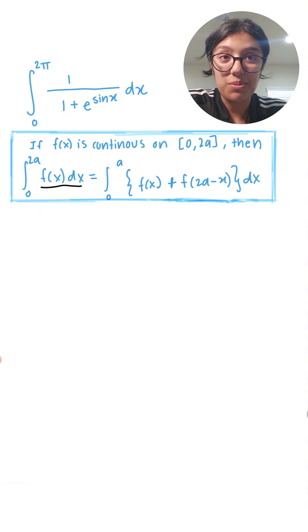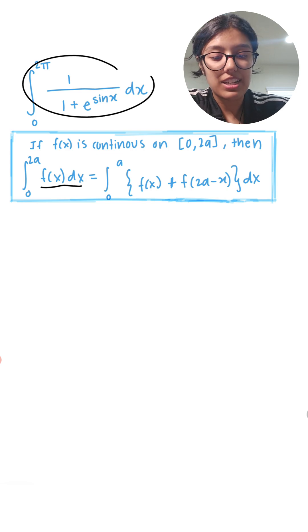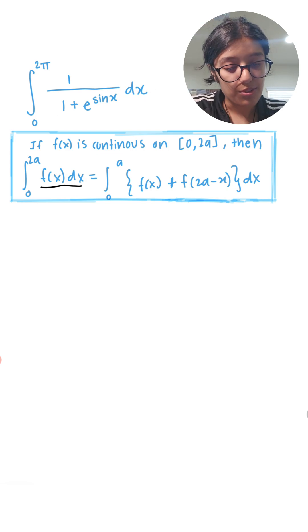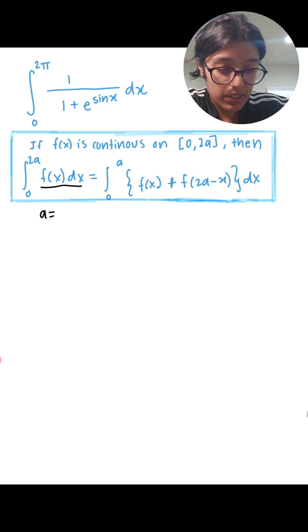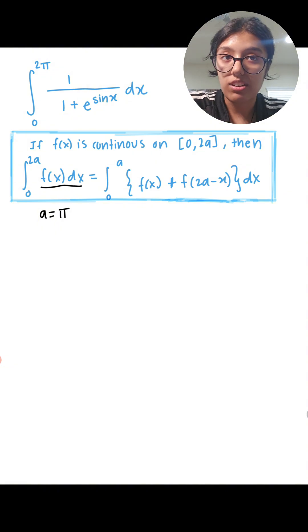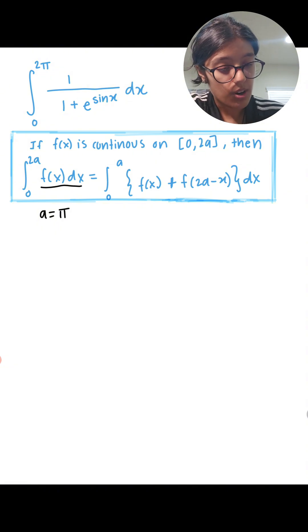plus f of 2a minus x dx. And yes this is a real formula. The function or f of x does not have to be an even function, it doesn't have to be odd, it just needs to be continuous on 0 to 2a. So let's actually apply this formula to our integral right over here. So right off the bat I see that 2a corresponds to 2π over here, so that has to mean a has to be equal to π. Once again a is a constant. Now I think we're all ready to go.